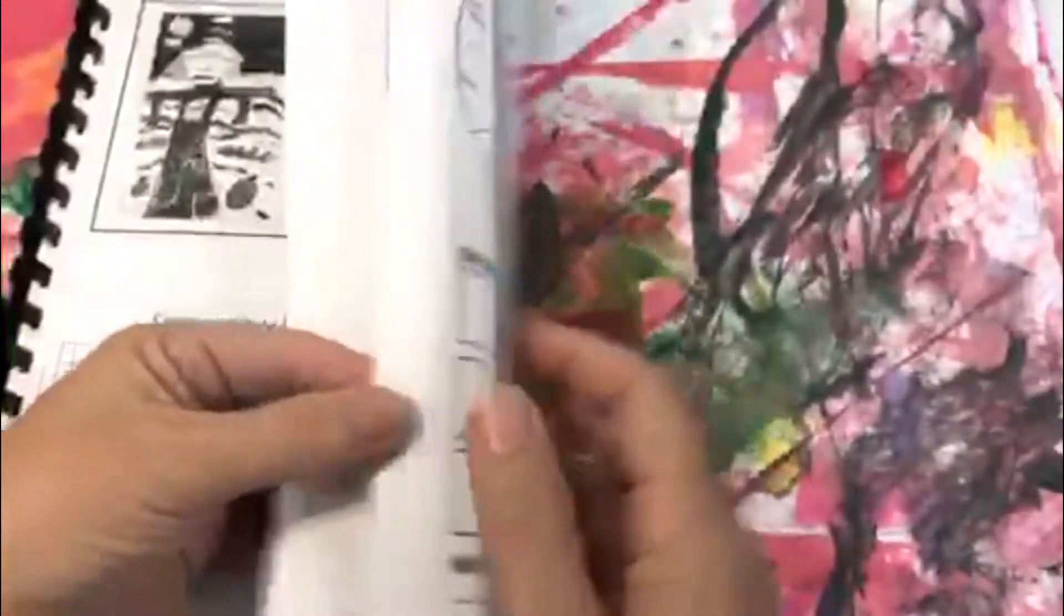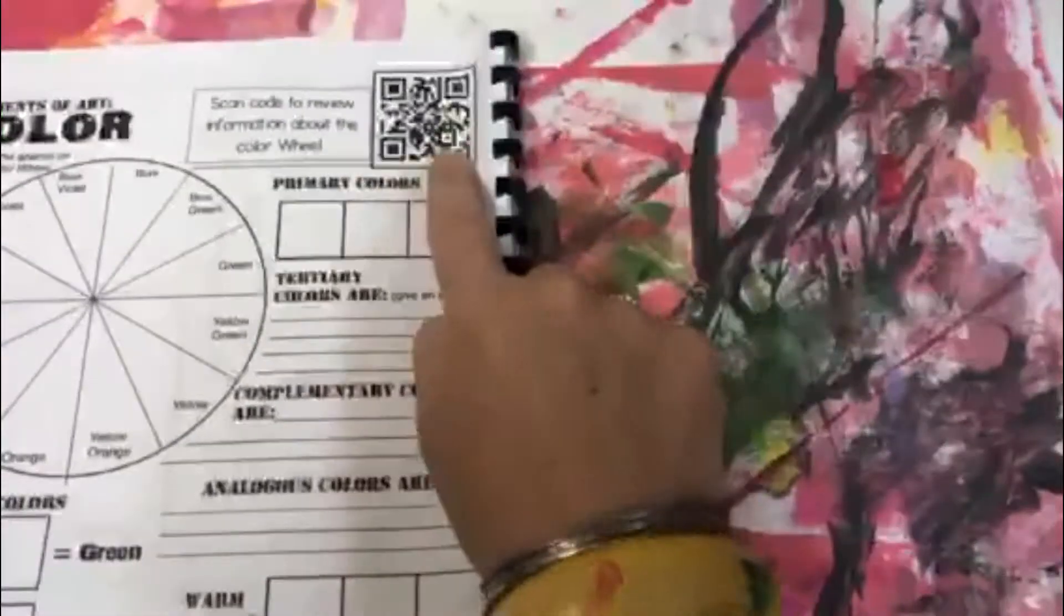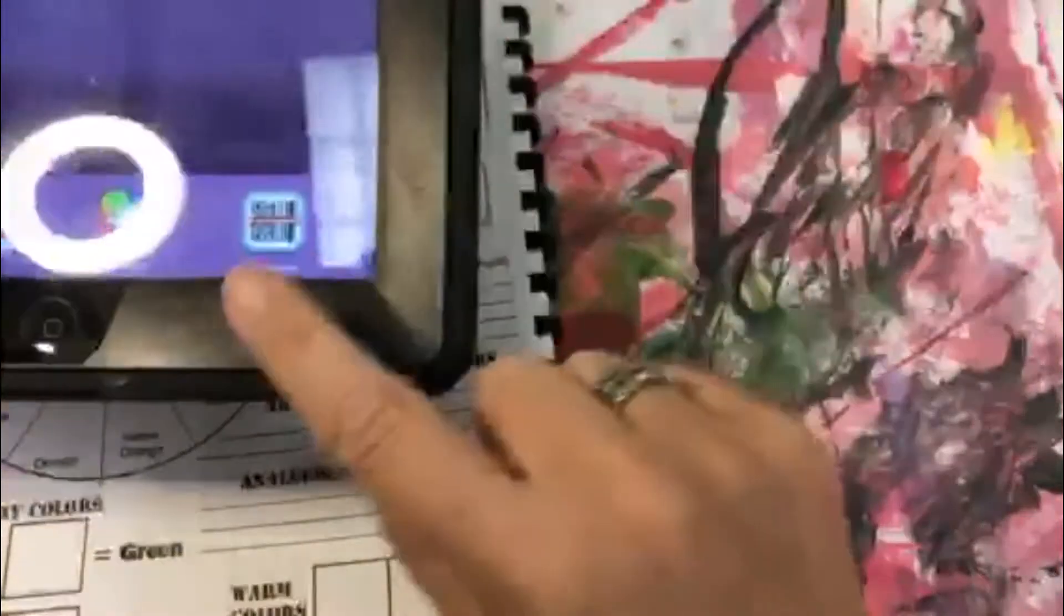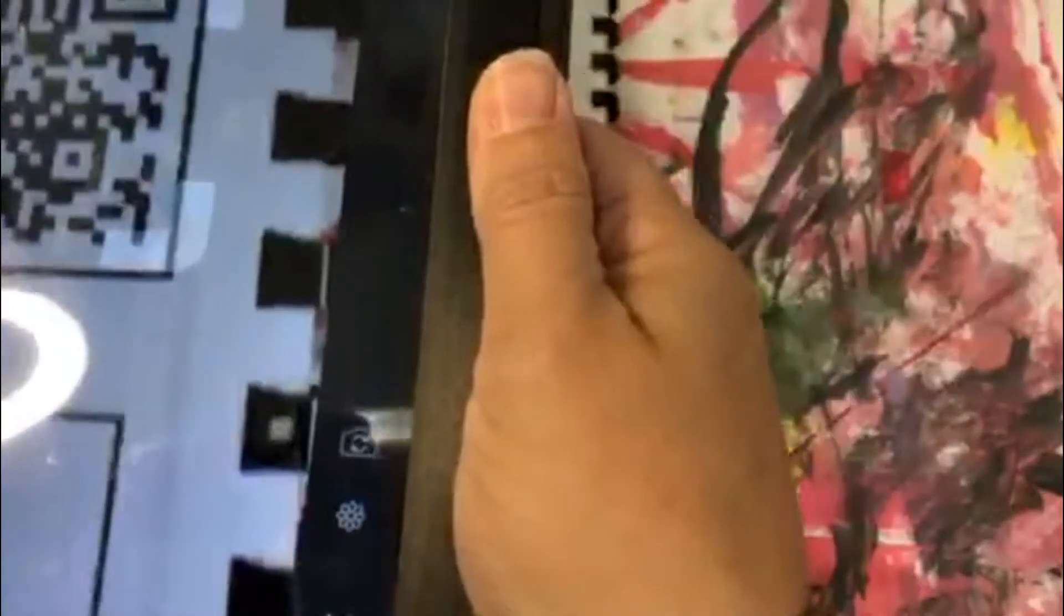So we're gonna flip to your color wheel page and fold it backwards. Now this is if you are absent. You would get one of our class iPads, you're gonna look for the QR reader, click it, up pops the camera, and we want to get that inside that little square.